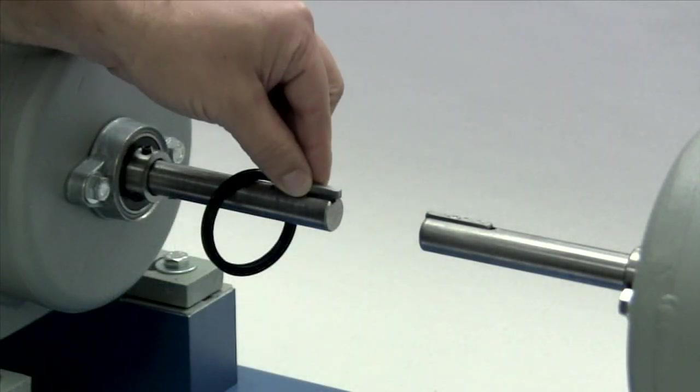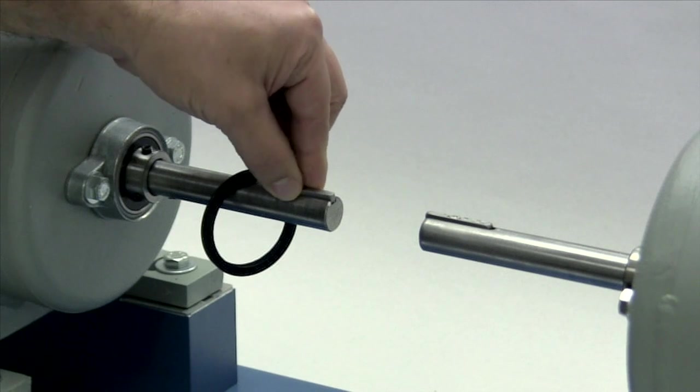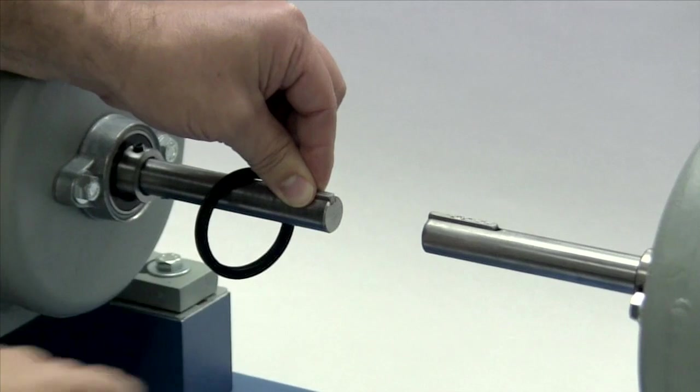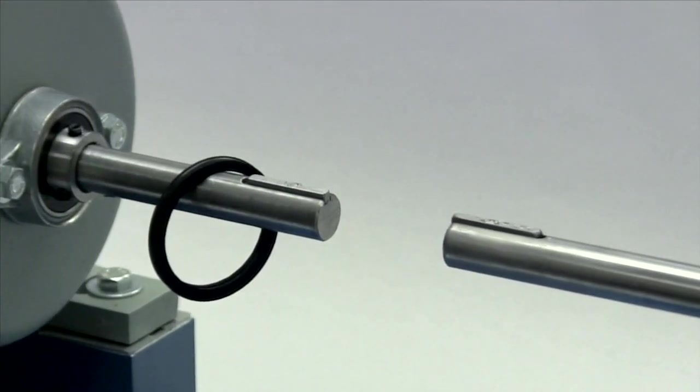Place the key in the keyway on the shaft. The key should fit snugly in the keyway with no side-to-side movement. The end of the key should line up with the end of the shaft and the hub once the hub is installed.